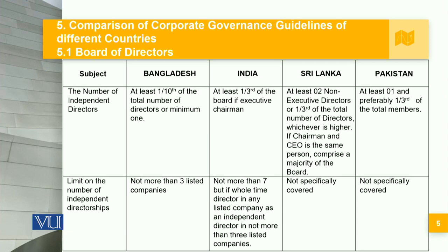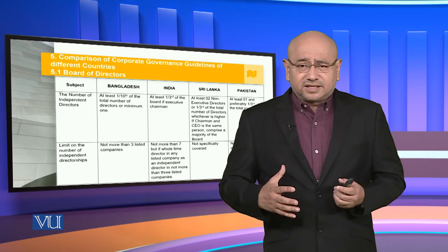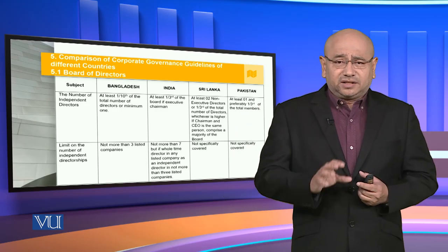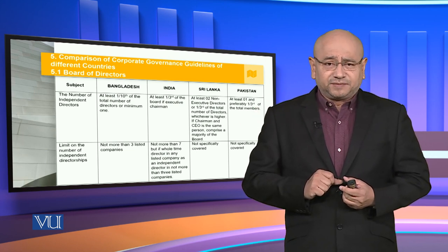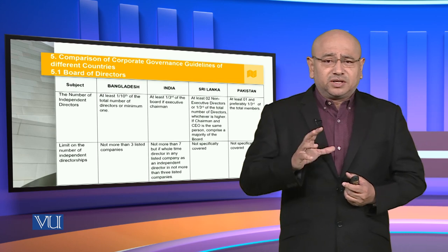Moving forward with the comparison in the board of directors, we're going to talk about a very important aspect: the number of independent directors. At least one tenth of the total number of directors or minimum one in Bangladesh. In India, at least one third of the board if there is an executive chairman. In Sri Lanka, at least two non-executive directors or one third of the total number of directors, whichever is higher; if chairman and CEO is the same person, they comprise a majority of the board. In Pakistan, at least one and preferably one third of the total members. So we see a lot of difference between the four countries in the number of independent directors.